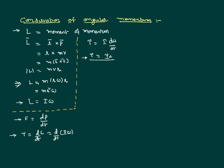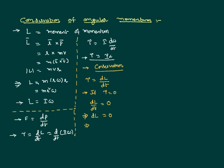Now let us go to the concept of conservation of angular momentum. As we said, torque is defined as rate of change of angular momentum. If there is no external torque acting, then rate of change of angular momentum equals zero, which means change in angular momentum equals zero, which means angular momentum is constant. This is called conservation of angular momentum: if there is no external torque acting on any system in rotational motion, the angular momentum of that system equals a constant.